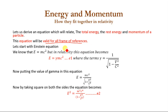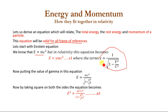Let's begin with Einstein's equation E = mc², but in relativity we can write this as E = γmc², where γ = 1 / √(1 - v²/c²). Putting the value of γ into this equation, we get E = mc² / √(1 - v²/c²).